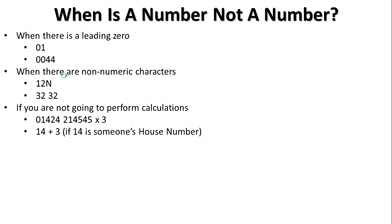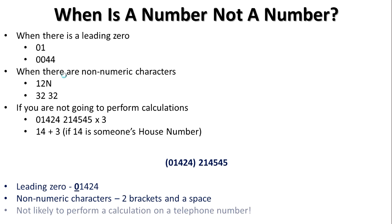Just to apply that to telephone number, there's a telephone number. We can see on there that first of all, there's a leading zero, zero, one, four, two, four. We can also see that there are non-numeric characters. There are two brackets, and there is a space. And last but not least, as we said before, it makes no sense to perform a calculation upon a telephone number.